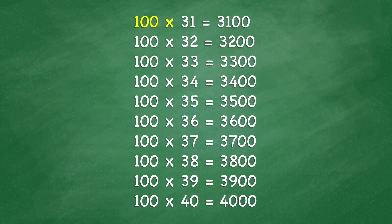100 times 31 equals 3,100. 100 times 32 equals 3,200. 100 times 33 equals 3,300. 100 times 34 equals 3,400. 100 times 35 equals 3,500.